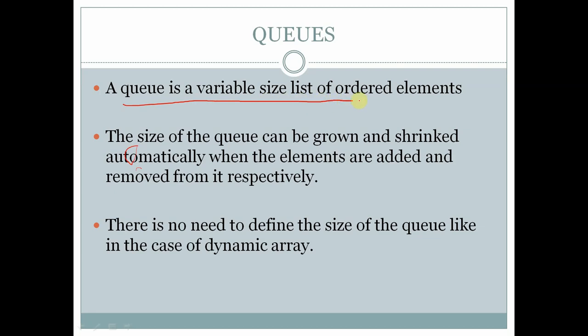A queue is a variable size list of ordered elements. The size of the queue can be grown and shrunk automatically when the elements are added and removed from it respectively.